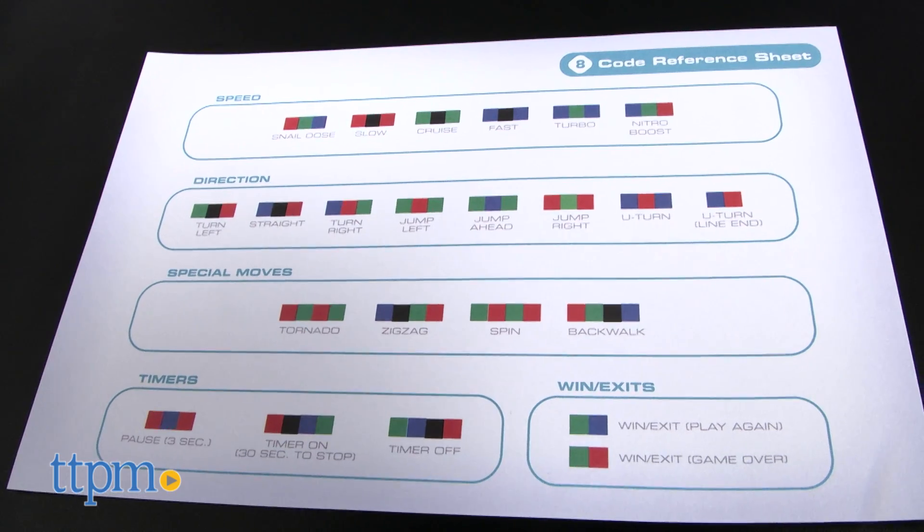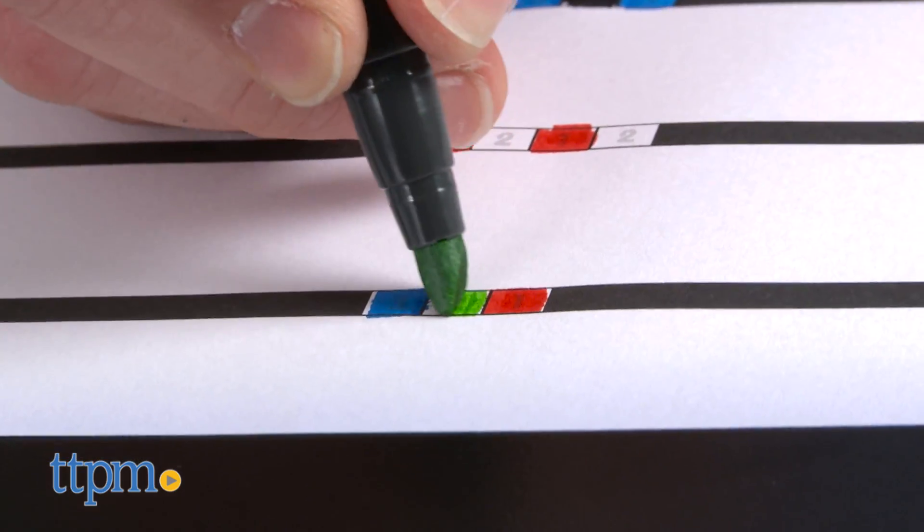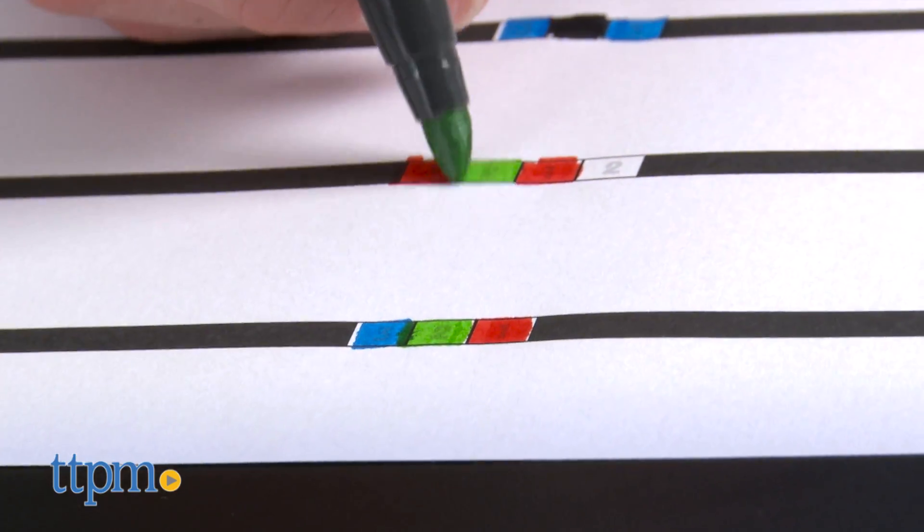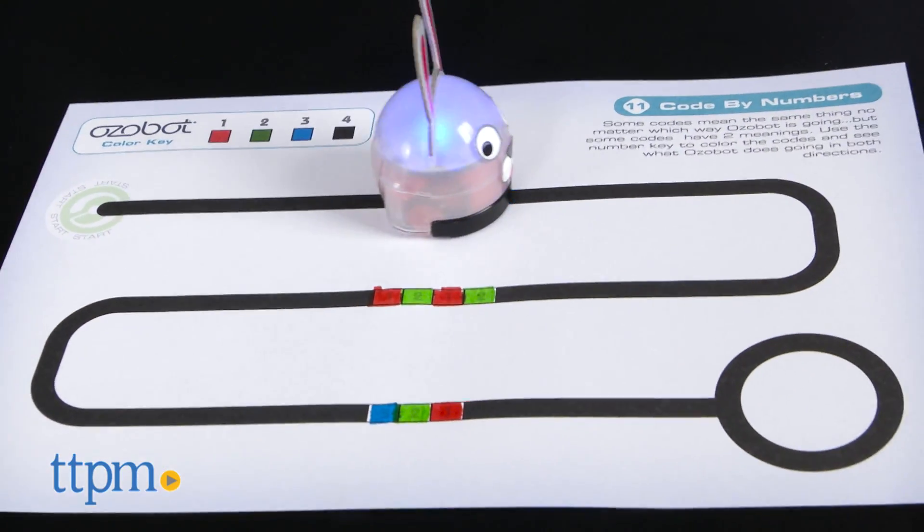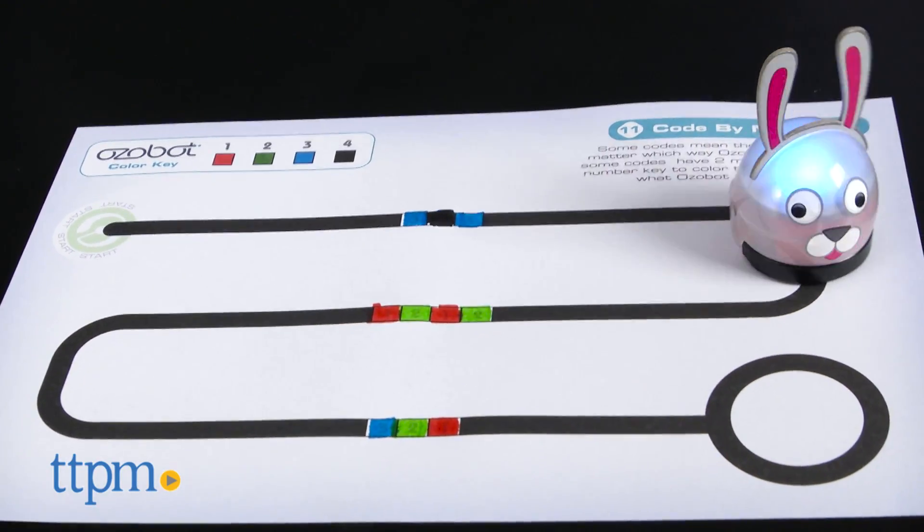Use the included markers or stickers to build your own courses for Ozobot to follow. And once you master those cards, it's time to take off on your own with apps and games, both on-screen and printable, available for Android, iOS, and web.